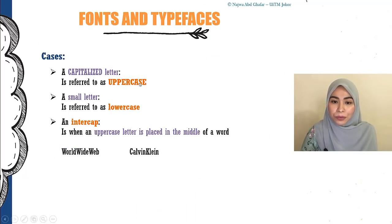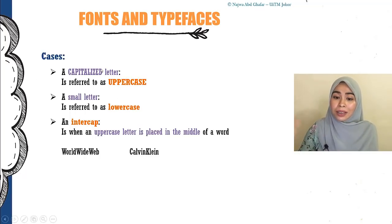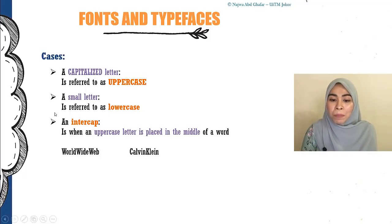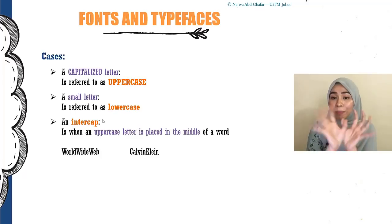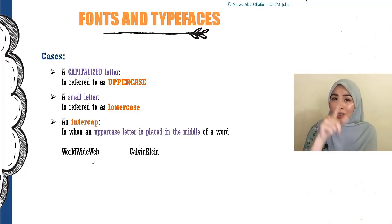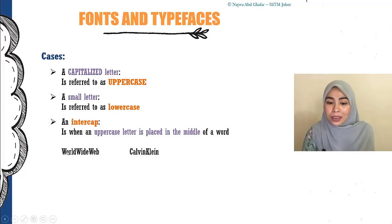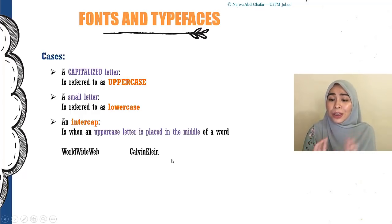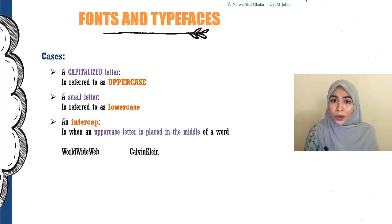Another thing you need to know is cases. A capitalized letter — if you make all letters capitalized, it's called uppercase. If you make all letters small, it is called lowercase. But if you make the first letter of each word uppercase, it's called an intercap. For example, World Wide Web — you want to differentiate between each word using capital letters. If you put capital letters in between words without spaces, like Calvin Klein written as CalvinKlein, this is called an intercap — where you have an uppercase letter in between lowercase letters.